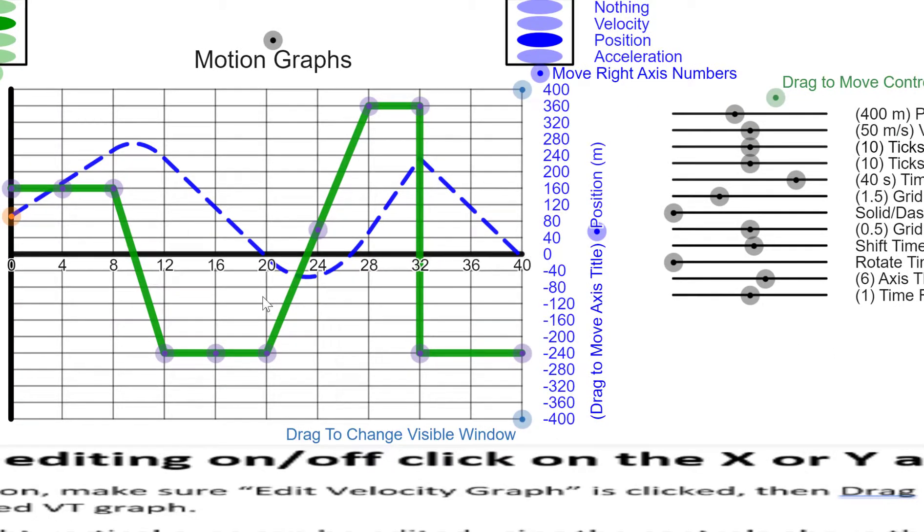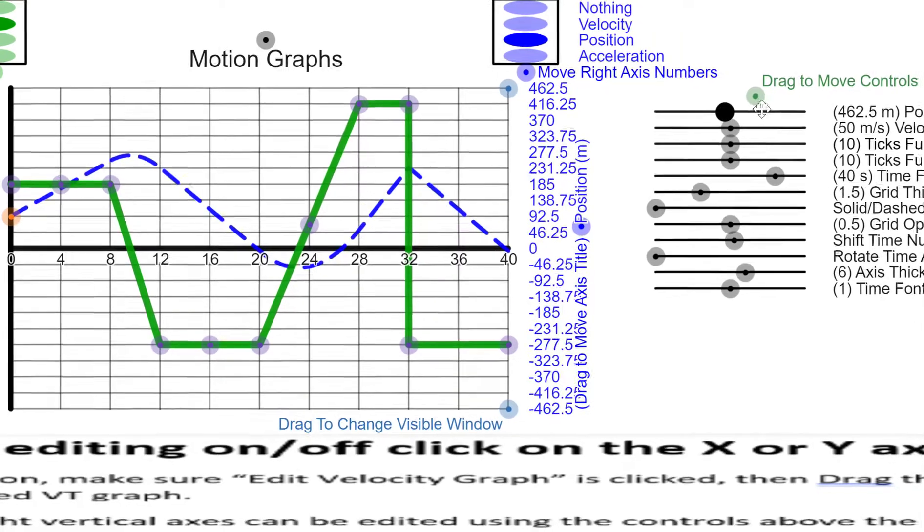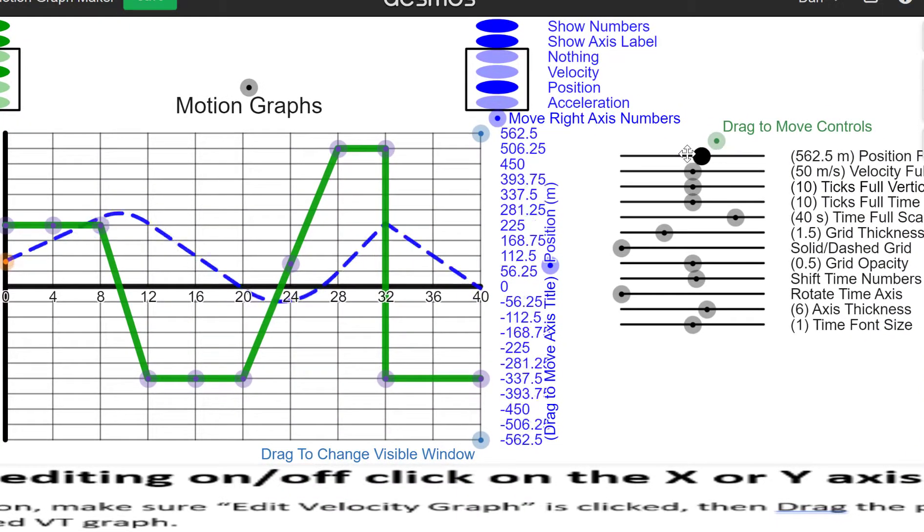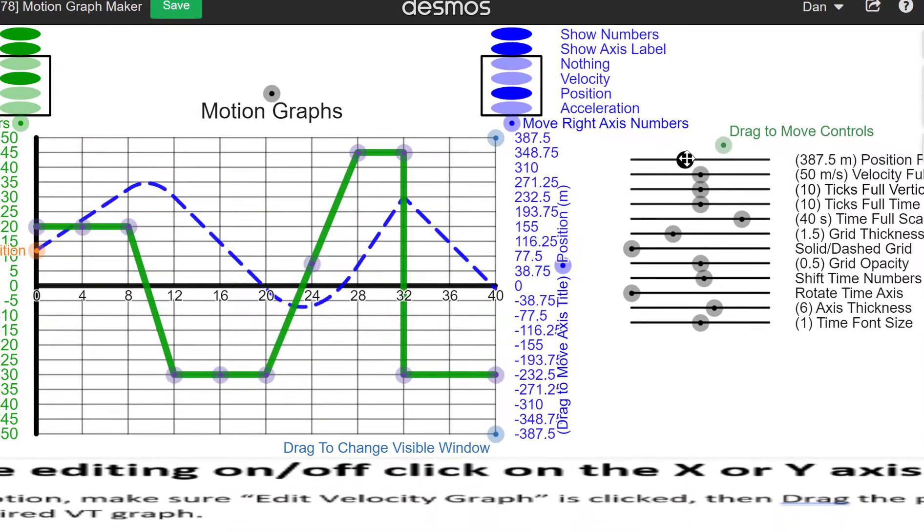For example, if you want to have the same shape of graph but with different numbers, you can change the full scale of the position graph, sort of like that.